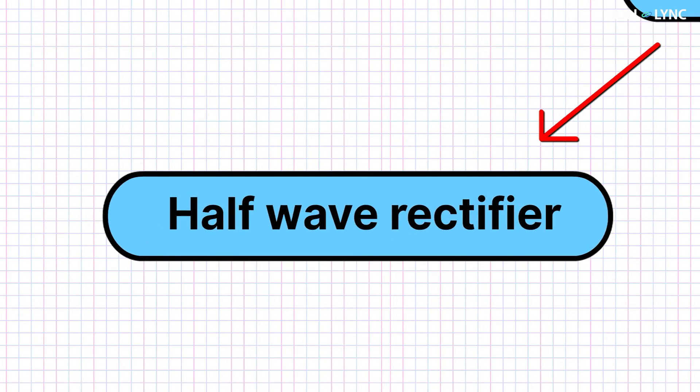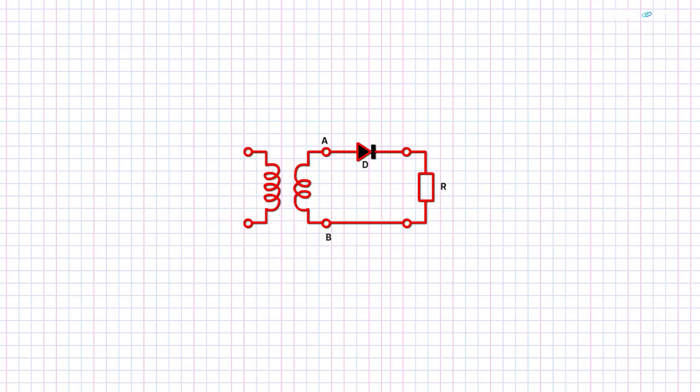Let's first look into the half-wave rectifier. The half-wave rectifier circuit consists of a step-down transformer. A step-down transformer is a device that lowers the incoming voltage. The diode is connected in series with the resistor and the output is taken across the resistor load. The circuit is supplied with an alternating current. Now, we know that a diode conducts only when forward-biased.